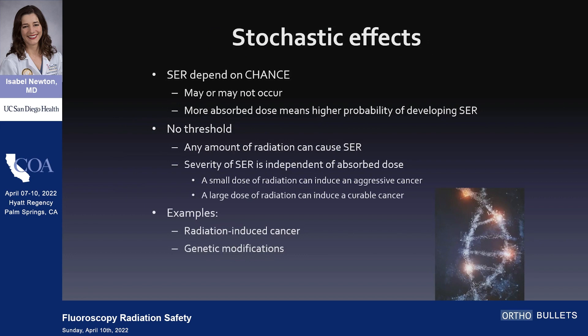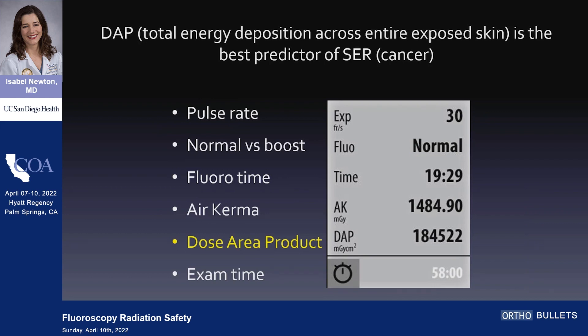Stochastic effects depend on chance — they may or may not happen, there's no threshold at which they occur, and there is no predictable magnitude of the occurrence when it happens. A really tiny dose can result in a terrible cancer; a big dose can result in nothing at all. It's all up to chance. The things we really think about are radiation-induced cancer and germline defects. A useful measurement is the dose area product, or DAP — there's no threshold, and you should get an idea of what the DAPs are for your procedures.